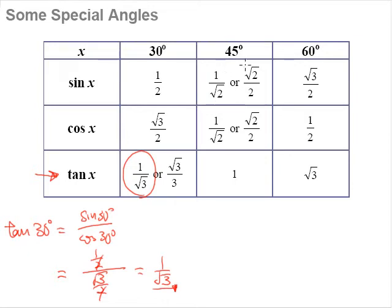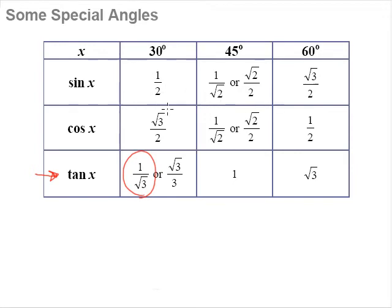It is also easy to see that sine 45 divided by cosine 45 gives 1, since they have the same value and any number divided by itself is 1. Similarly, for tangent 60, √3/2 divided by 1/2 equals √3/2 multiplied by 2, which gives √3. There are certain relationships among these special angles that can actually help you memorize them. If you know sine 30, you know cosine 60; if you know sine 45, you know cosine 45; and if you know sine and cosine for any angle, you can find its tangent.